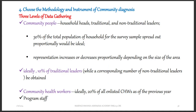Another part of planning is choosing the methodology and instruments for community diagnosis. There are three levels of data that can be gathered. You can gather data from community people — household heads, traditional and non-traditional leaders. Using 30% of the total population of households for the survey sample, spread out proportionally, would be ideal. You cannot go to the entire community, but 30% is enough to give you information representing the whole community.